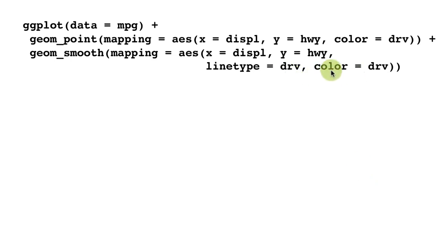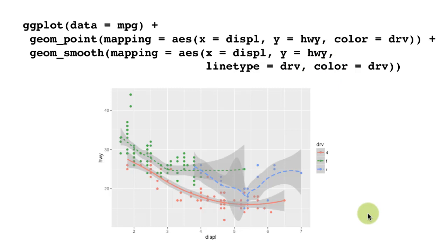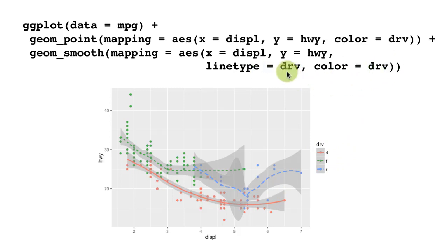This time we are adding one more aesthetic — color. We are saying not only should the line type depend upon the drive, the color should also depend on the drive. So not only do the three lines have different types, they also have different colors. Because both aesthetics, line type and color, are mapped to the same element of the data (the drive), ggplot generated only one combined legend showing both line type and color together.